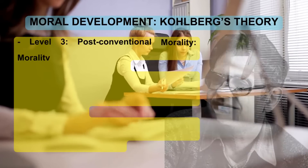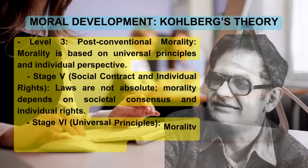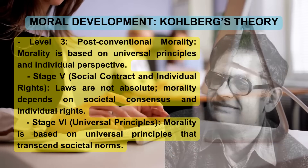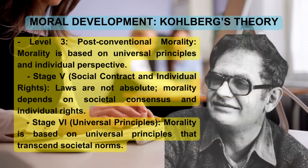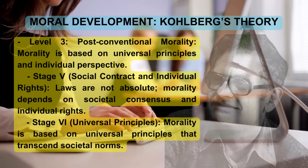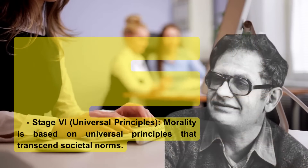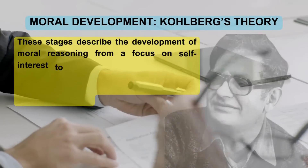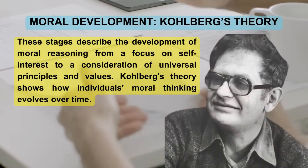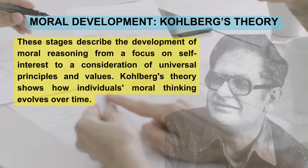Level 3 is Post-conventional morality, where morality is based on universal principles and individual perspective. Stage 5 is the social contract and individual rights — laws are not absolute, and morality depends on societal consensus and individual rights. Stage 6 is universal principles — morality is based on universal principles that transcend societal norms. These stages describe the development of moral reasoning from self-interest to universal principles, showing how individuals' moral thinking evolves over time.